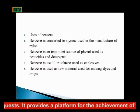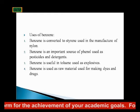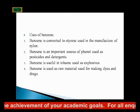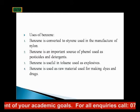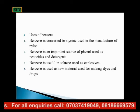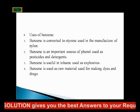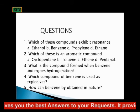Uses of benzene. Number 1: benzene is converted to styrene, which is used in the manufacture of nylon. Number 2: benzene is an important source of phenol used as pesticides and detergents. Number 3: benzene is useful in toluene, which is used as explosives. Number 4: benzene is used as a raw material for the making of dyes and drugs.